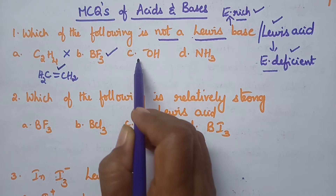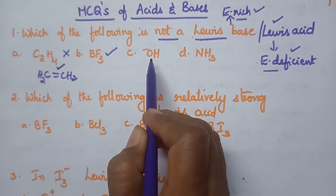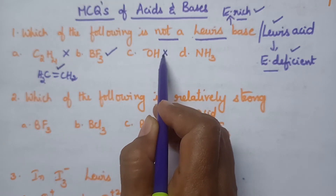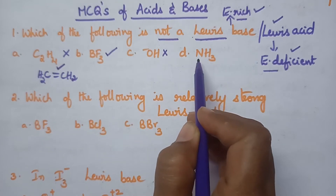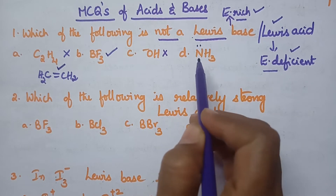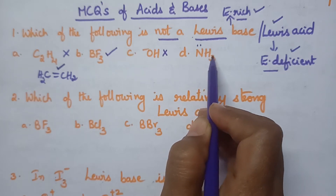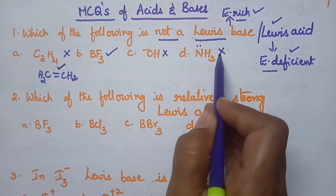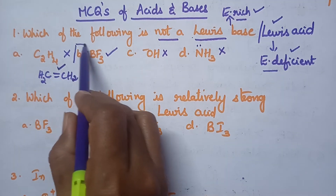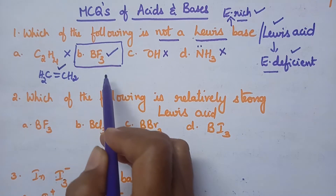The third option is OH⁻, which is an electron rich species and hence acts as a Lewis base. The fourth option is ammonia, where nitrogen carries a lone pair of electrons, making it an electron rich species and a Lewis base. So in the given options, option B, that is boron trifluoride (BF3), is the right answer.